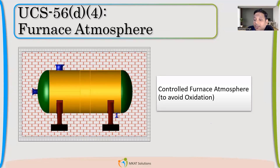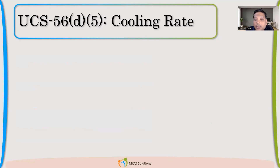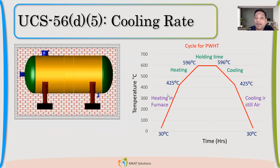The furnace temperature shall be controlled because if too much oxygen is present, there is a chance of oxidation. So you need to have a controlled atmosphere. One participant correctly noted: if the temperature is 595 plus 83, that is allowed, but you should not enter the next heat treatment cycle. Also, at very high temperatures, you need to be careful about potential loss of material strength. A controlled atmosphere is essential to avoid unnecessary corrosion and oxidation.